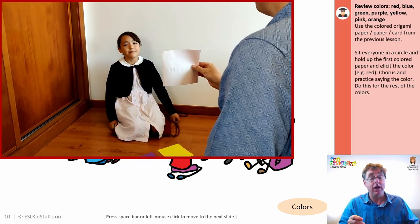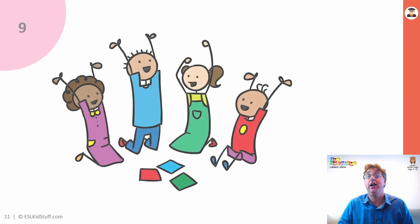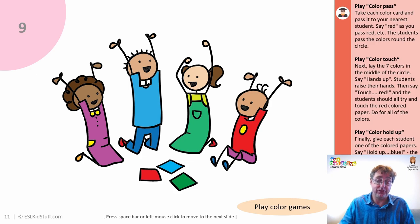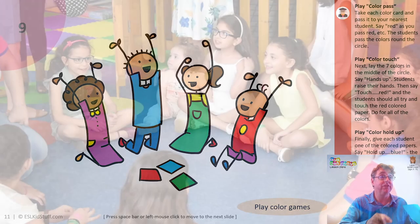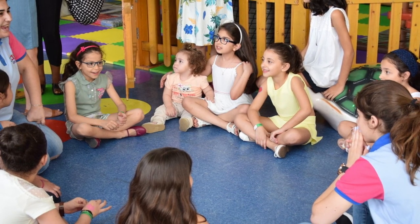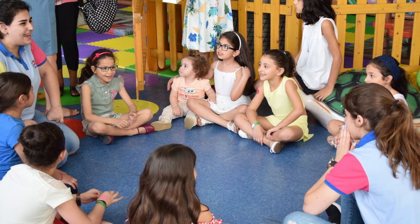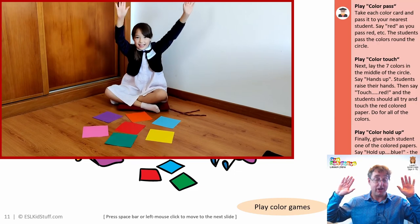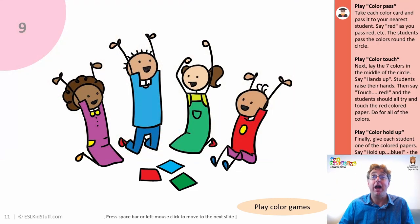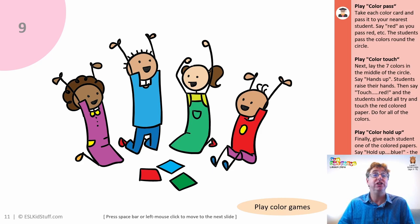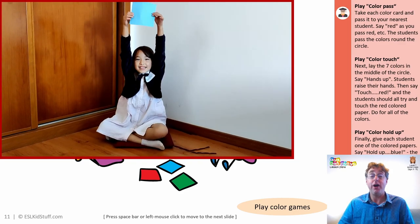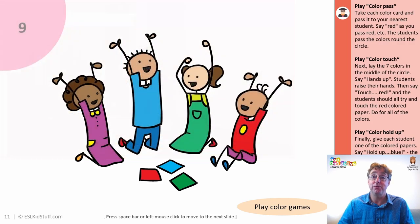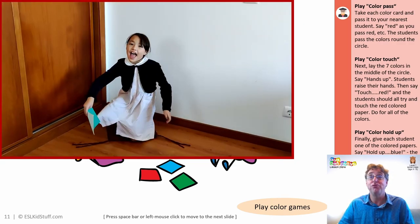Next we'll play the three colour games that we do in every lesson. We've got the colour pass, where you hold up a colour and pass it round the class — everyone says what colour it is as they pass. Then colour touch, where you put the colours on the floor in the middle — now there are seven colours so it gets even more interesting — everyone has hands up and the teacher shouts out a colour to touch. And next, colour hold up, where each student is given a colour and the student holding the called colour must hold it up. There are variations where students can jump, turn around, or do a different action.